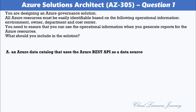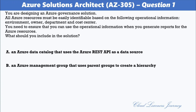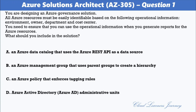The options are: A) an Azure Data Catalog that uses the Azure REST API as a data source; B) an Azure Management Group that uses parent groups to create a hierarchy; C) an Azure Policy that enforces tagging rules; D) Azure Active Directory administrative units. The correct option is C — an Azure Policy that enforces tagging rules.